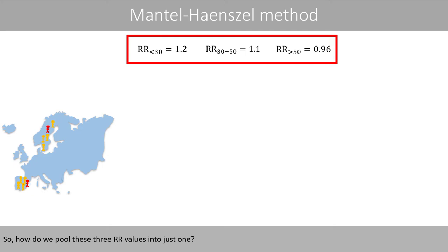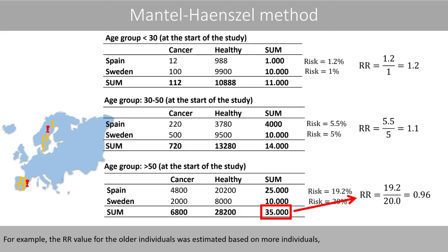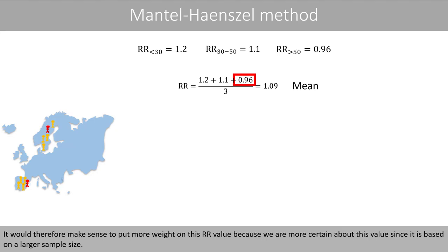So how do we pool these three relative risk values into just one? One way is to calculate the mean of the three values. However, the problem with such a calculation is that we do not account for the different sample sizes in the three age groups. For example, the relative risk value for the older individuals was estimated based on more individuals compared to the relative risk value for the younger individuals. It would therefore make sense to put more weight on this relative risk value, because we are more certain about it since it is based on a larger sample size.